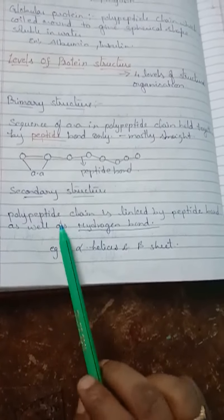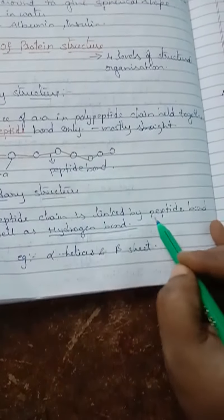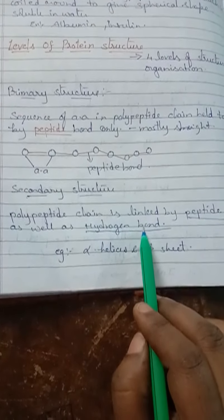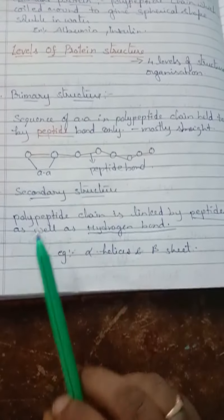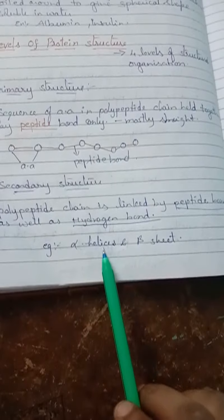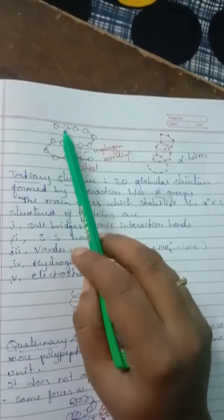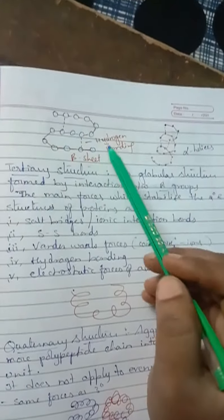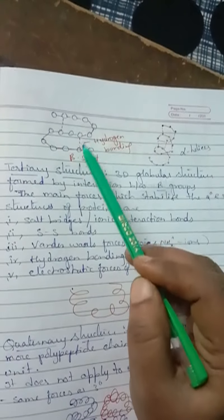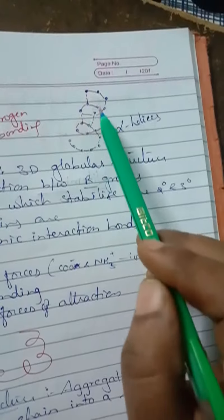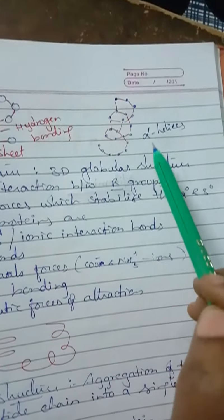Next is the secondary structure. Here the polypeptide chain is linked by peptide bonds as well as hydrogen bonds — two bonds are present. Examples are alpha helices and beta sheets. Looking at the structure, the primary structure is bent; amino acids are joined with peptide bonds, and cross-linkage is also present via hydrogen bonding. This is one type of secondary structure. In the other type, amino acids are again joined with hydrogen bonds — this is the alpha helix.